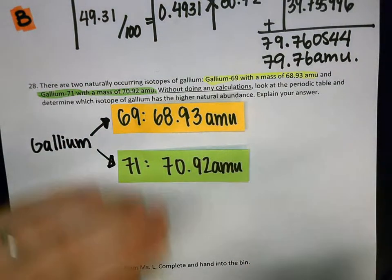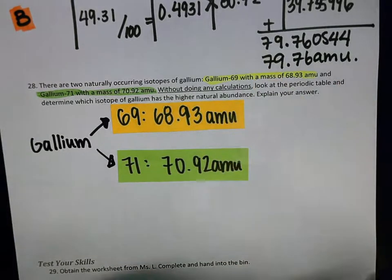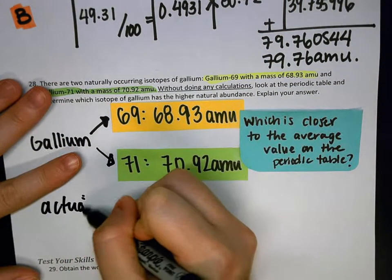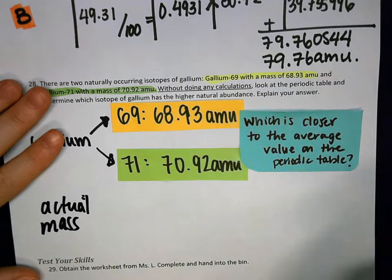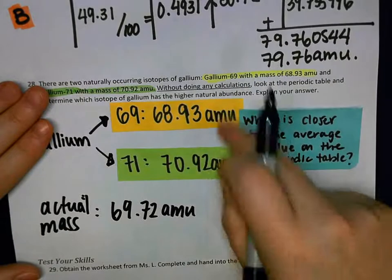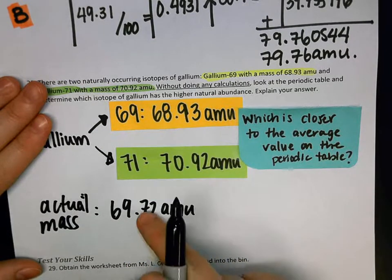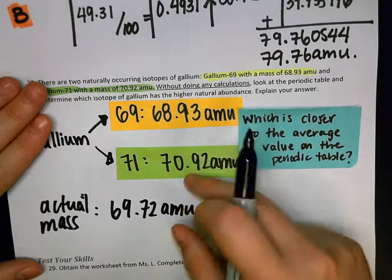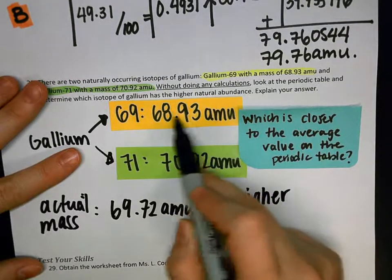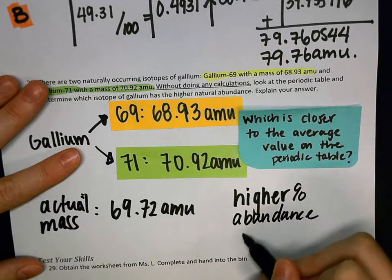I've got two isotopes, and they've got slightly different masses. The real question that I'm asking you in this problem is which one of these numbers is closer to the average value on the table of elements. According to the table of elements, the actual mass of this is going to be 69.72 AMU. Between the two of these, this number is found by a weighted average of these two numbers. Whichever one of these two numbers is closer to the average, that's going to tell me which of these is more abundant. Because the gallium-69, this number is closer to the actual number, the higher percent abundance is going to be for gallium-69.